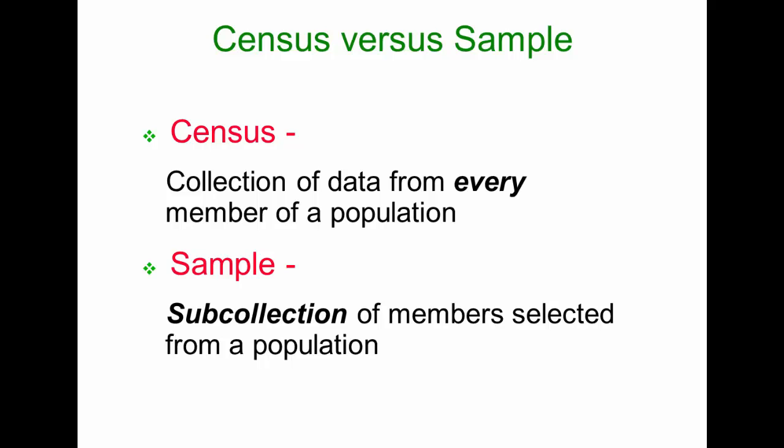If we can collect data from every member of a population, that's what we call a census. Every 10 years in our country, we try to conduct the census. However, it's never really accurate because by the time we start, it takes so long to collect the data that the population has actually changed — some people will have passed away, some people will have been born. Getting a census on a very large population is really, really difficult.